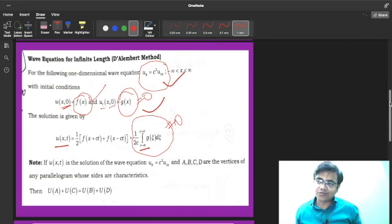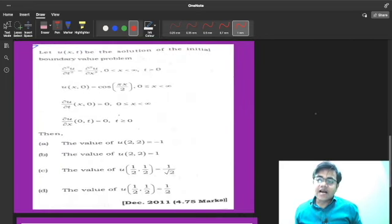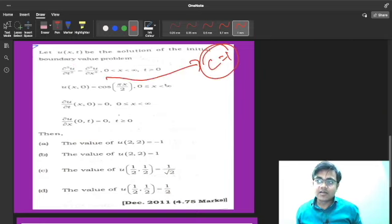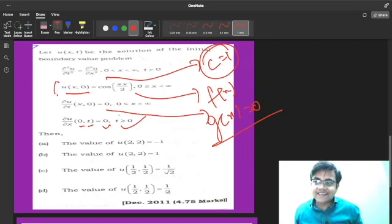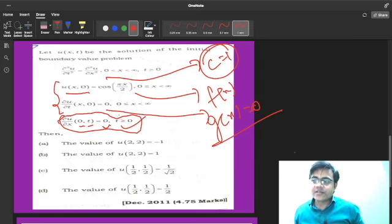Here we are going to do the comparison. You can see your c equals 1. Your u(x,0) equals this, so this is your f(x). Your g(x) is 0. And ∂u/∂x at (0,t) is 0 for t greater than or equal to 0. Actually we need these two, this is an extra condition given to confuse you, its use is not there in this question.